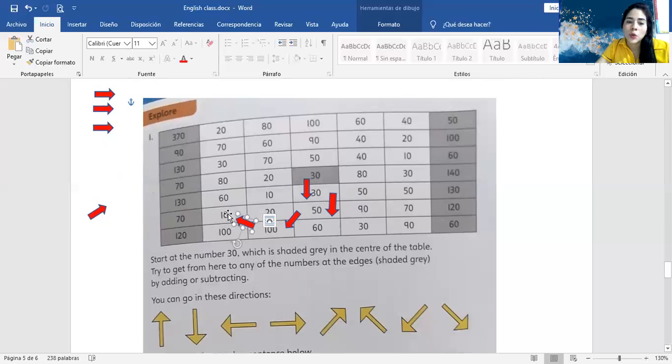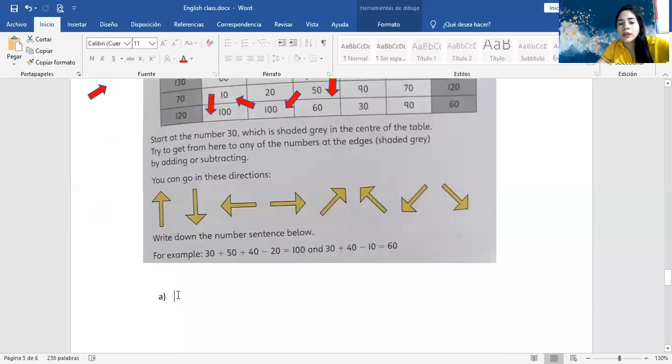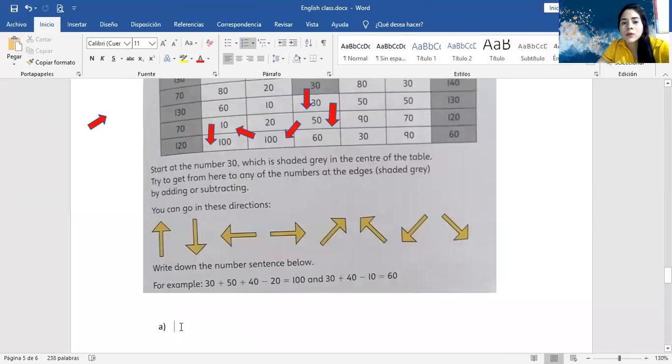210 plus 10. 220 minus, minus, minus. You are going to go down. Minus 100 equals 120. So what? What did we do? You have to draw right here. What's the first number? 30. You have always to start with 30.